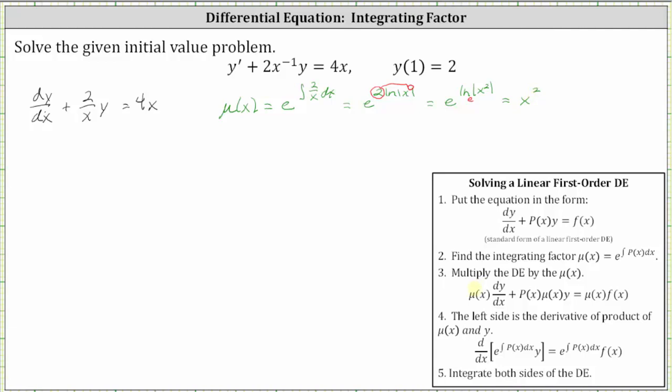For step three, we multiply both sides of the differential equation by mu of x, or in our case, x squared. This gives us x squared times dy/dx plus two divided by x times x squared y equals x squared times four x. Simplifying, we have x squared times dy/dx plus—notice here one factor of x simplifies out—giving us plus two xy equals four x cubed.